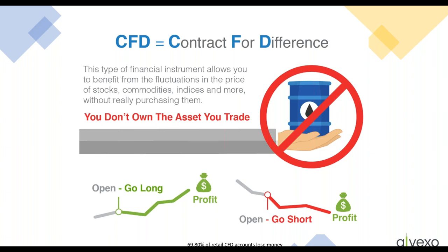Going short allows you to sell something you don't own to buy it back later and make a profit. For example, if Alphabet was trading at $500 and you believed it was going to fall, you could sell that Alphabet CFD in the morning — even though you don't own any — and buy it back the next afternoon when it hits $400, making a profit on the difference.